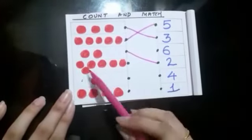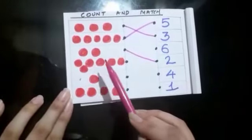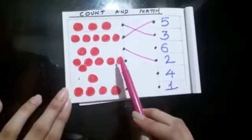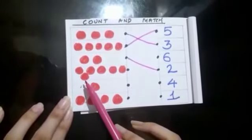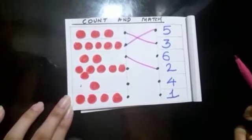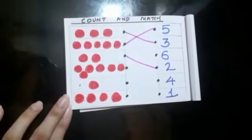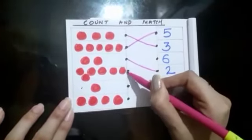Next, 1, 2, 3, 4, 5, 6. Where is 6? 6 is there. Let's match.